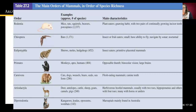Primates include monkeys, apes, and humans. They have opposable thumbs, binocular vision, and very large brains, and some are bipedal. We also see Carnivora, which are cats, dogs, weasels, bears, seals, and sea lions. They are flesh-eating mammals with canine teeth.